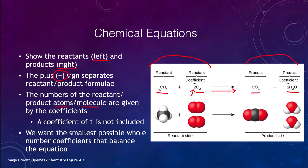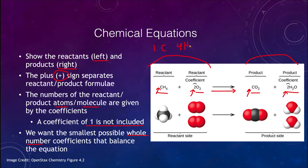This says that there is one methane molecule — a coefficient of one is not written. Then there are two oxygen molecules, and that yields one carbon dioxide molecule and two water molecules. We want the smallest whole number coefficients that balance the equation, and it's balanced when the number of atoms of each type are the same on both sides. On the left side, we have one carbon, four hydrogens, and — because of the two coefficient — two times two is four oxygens.